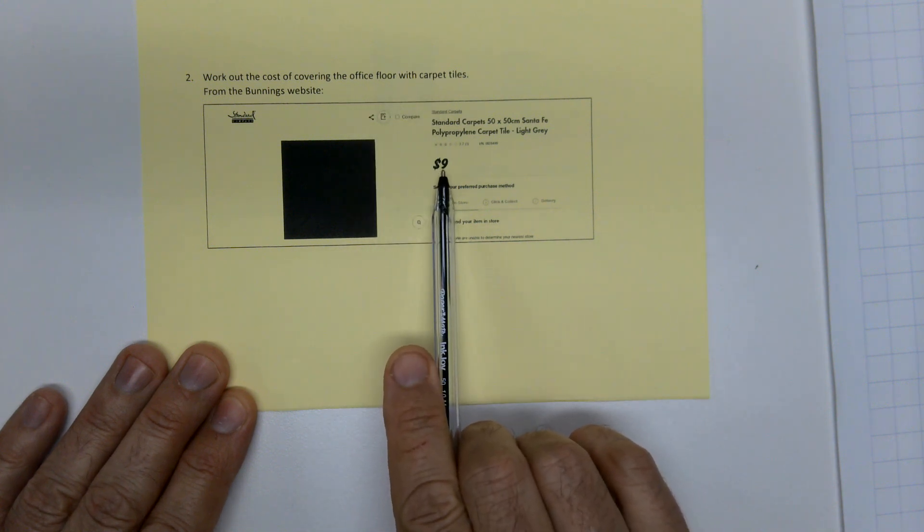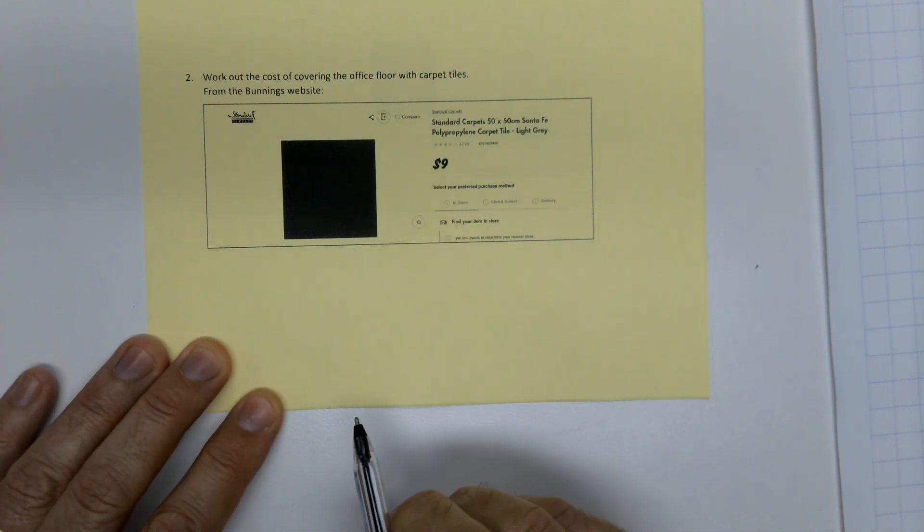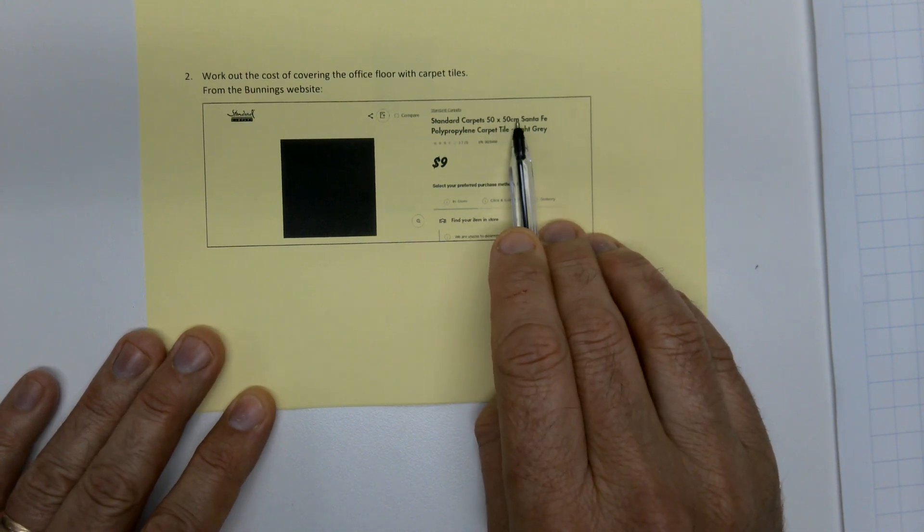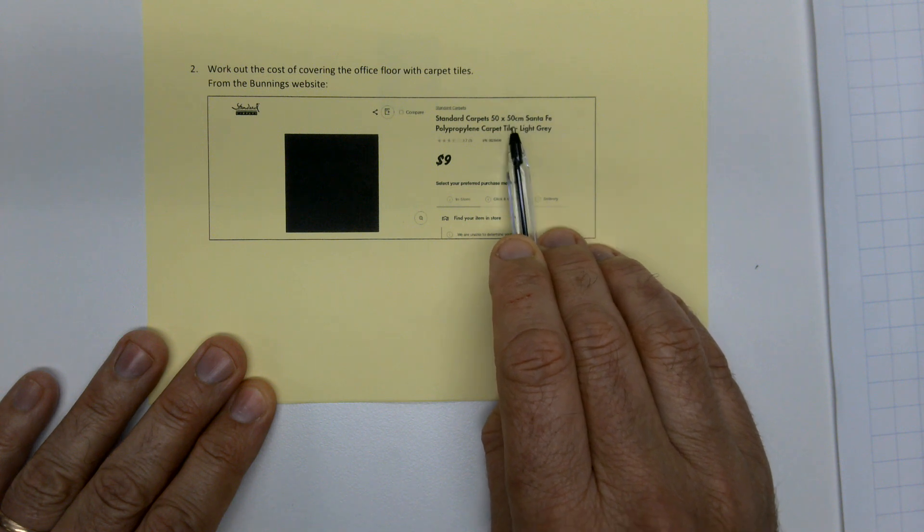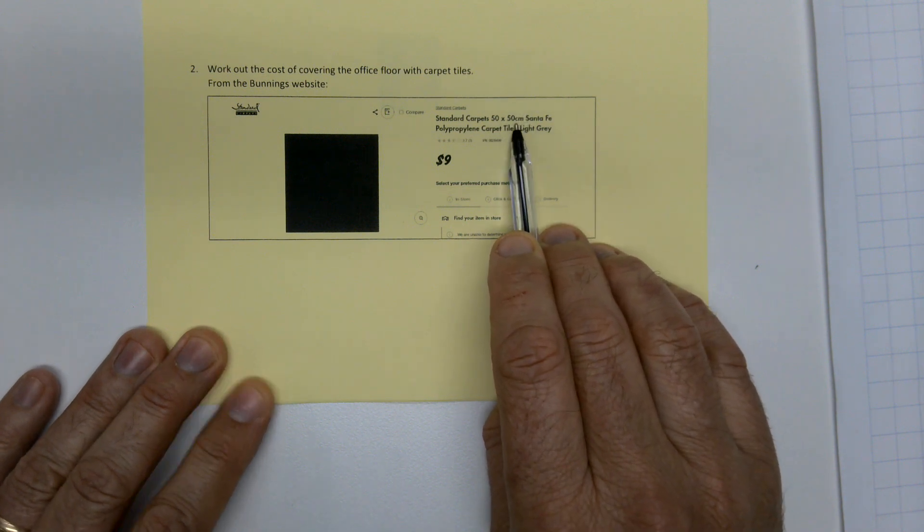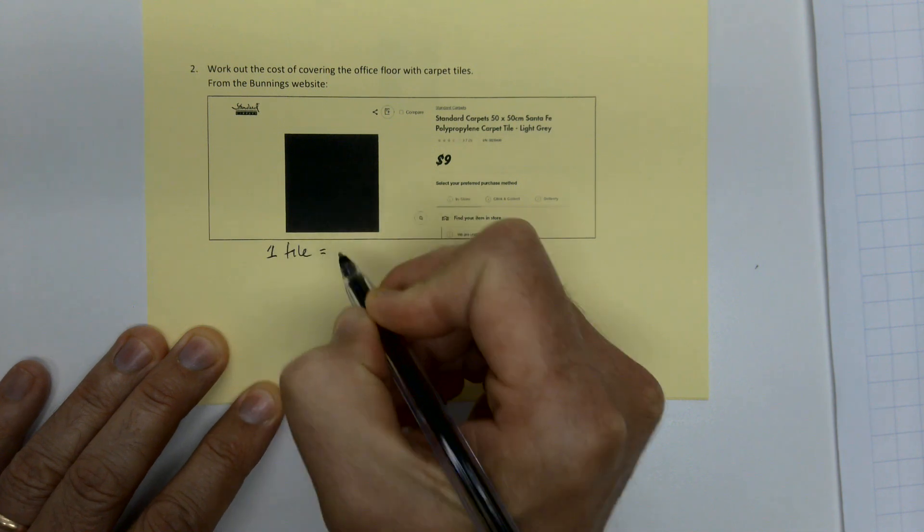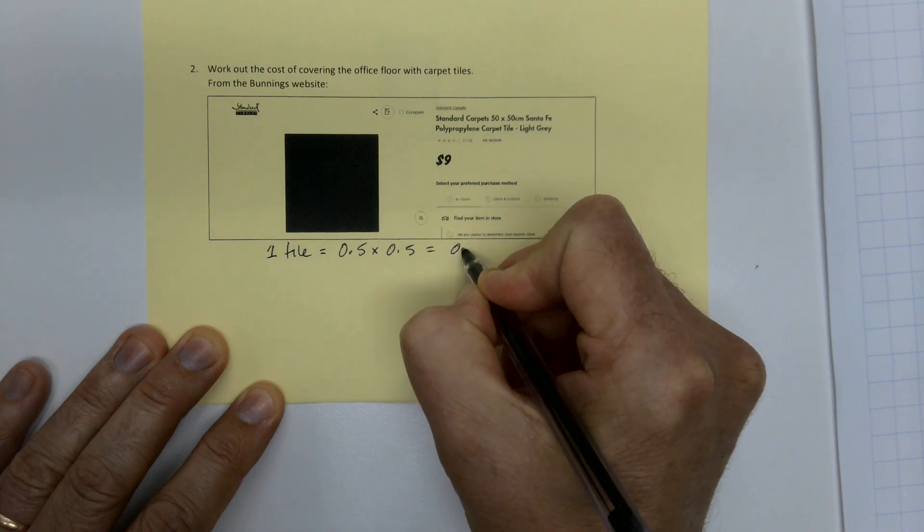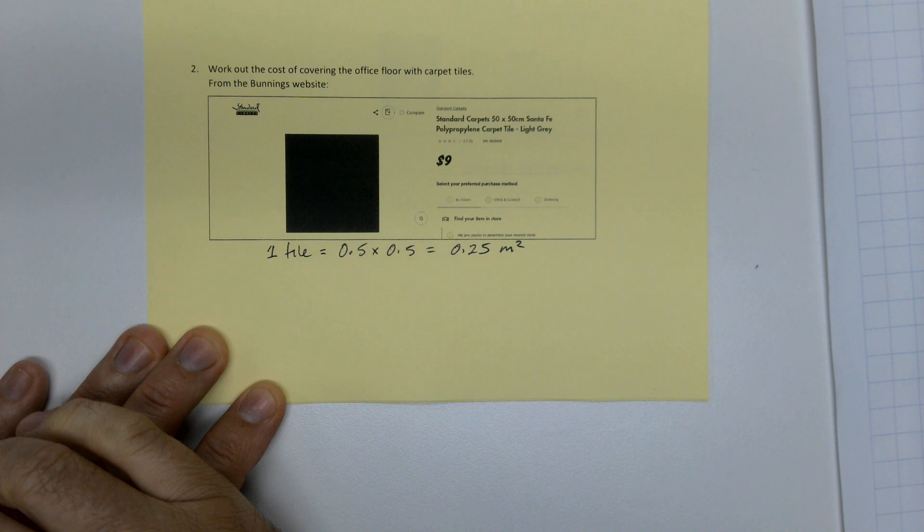Each one is $9. So we need to know how many we need. What's one tile? One tile is 50 by 50 centimeters. Get that to meters. I keep saying this again and again. If you want to get square meters, you've got to start in meters. So what's going on there? So one tile, that's actually a half meter by a half meter. So that's 0.25 square meters.